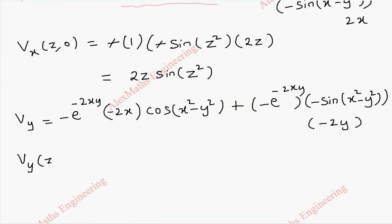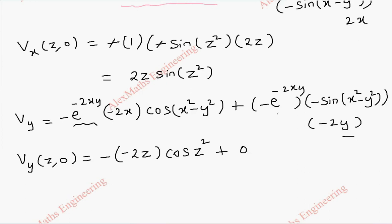Once again, vy of z comma 0 becomes: the exponential term becomes 1 when the power is 0 by replacing y with 0, so that is 1. We have a minus sign, and this becomes minus 2z, and this becomes cos z squared. Since we have a product of y in the second term, that entire term is 0. So vy at y equal to 0 is 2z times cos z squared.